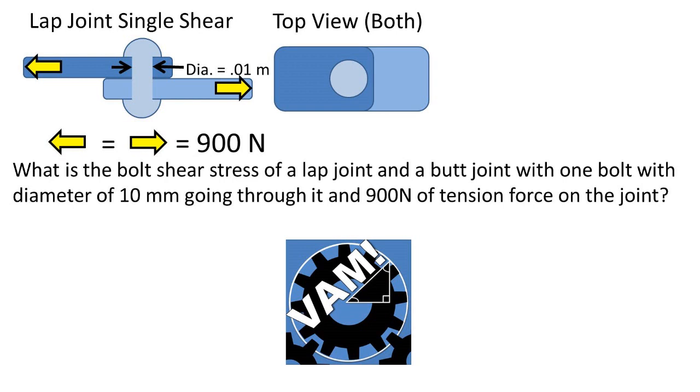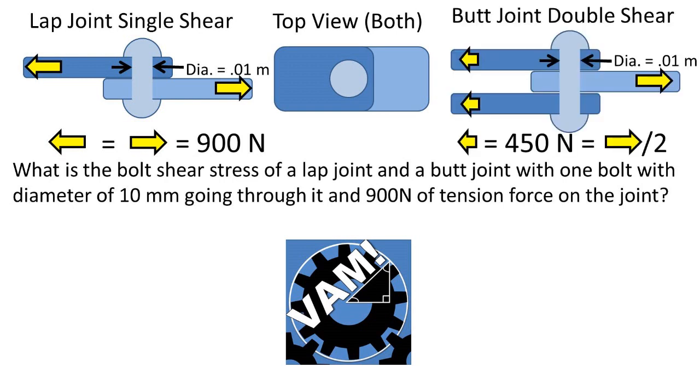The lap joint is joined by a bolt which is pictured on the left of the string. We will also be finding the shear stress of a butt joint, which consists of three pieces of material. Two of the pieces are sandwiching the other, which is pictured on the right of the string.